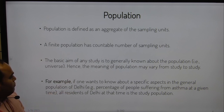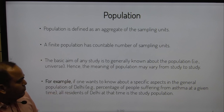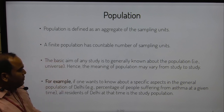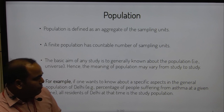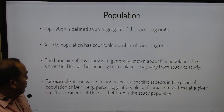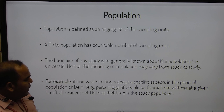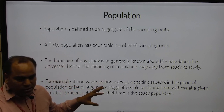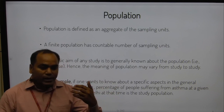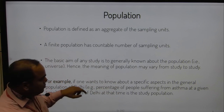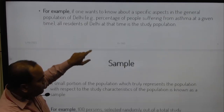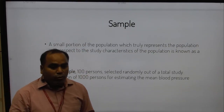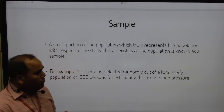For example, if one wants to know about a specific aspect of the general population of Delhi — such as the percentage of people suffering from asthma at a given time — then all residents of Delhi at that time constitute the study population. It may vary from person to person, objective to objective, and across different types of topics.